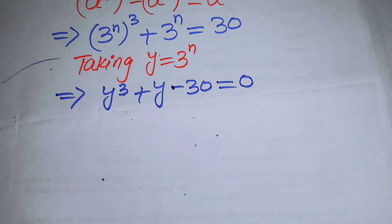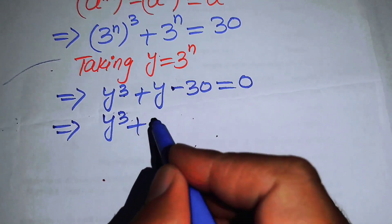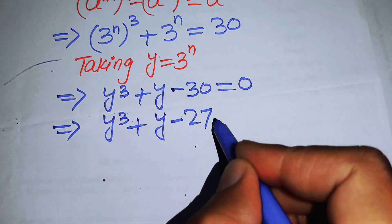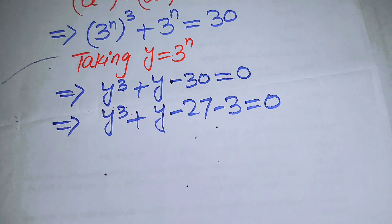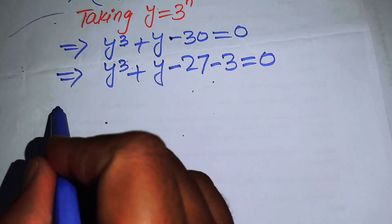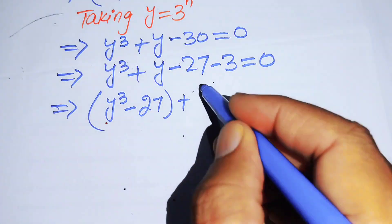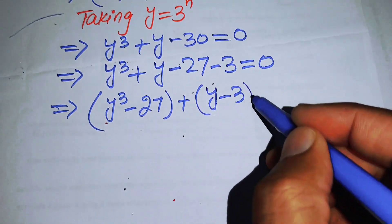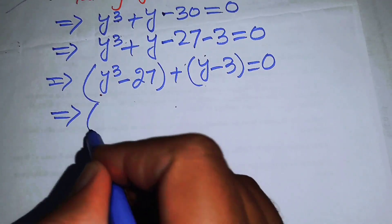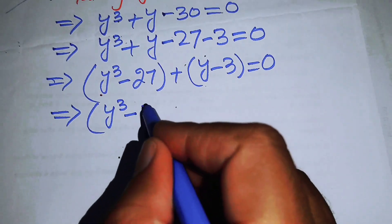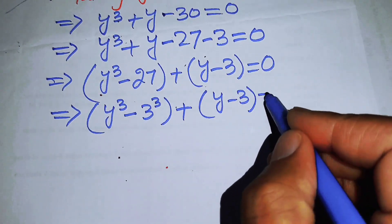Now we make the factors of this cubic equation by breaking minus 30 as minus 27 minus 3, giving y cubed plus y minus 27 minus 3 equals 0. We pair y cubed with 27 and y with 3, then write 27 as 3 cubed.